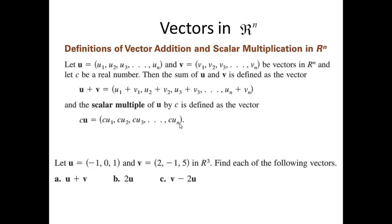Quick example: if U is the vector given by (-1, 0, 1) and V is the vector given by (2, -1, 5) — these are vectors in R3 — find U plus V. That will be component-wise addition: -1 plus 2 gives 1; 0 plus -1 gives -1; 1 plus 5 gives 6. So U plus V equals (1, -1, 6).